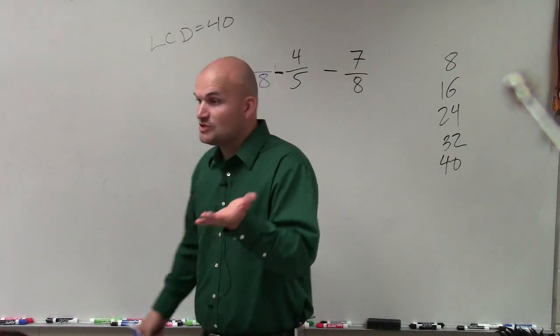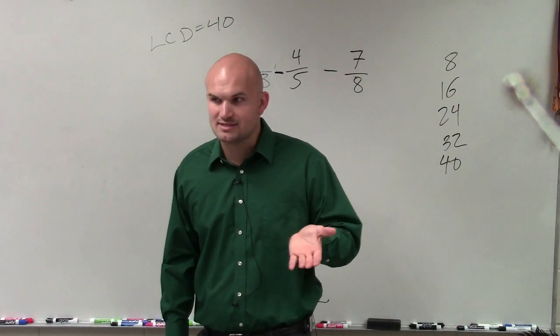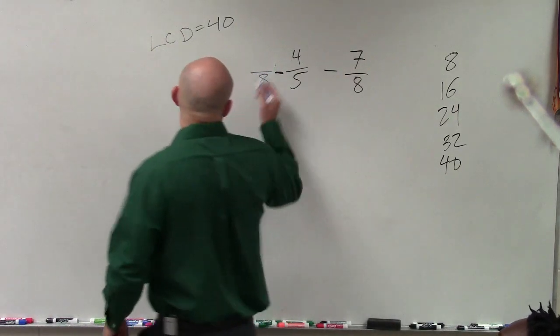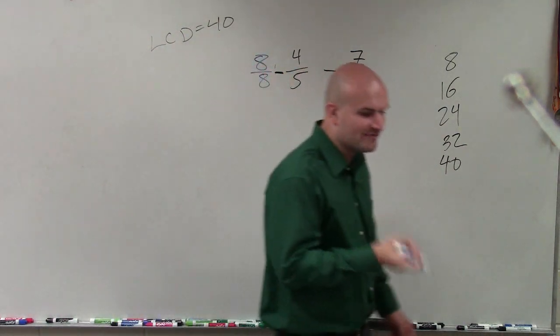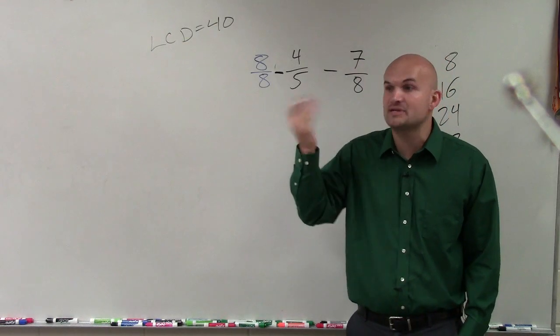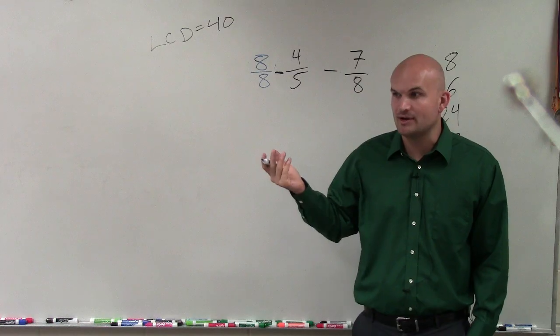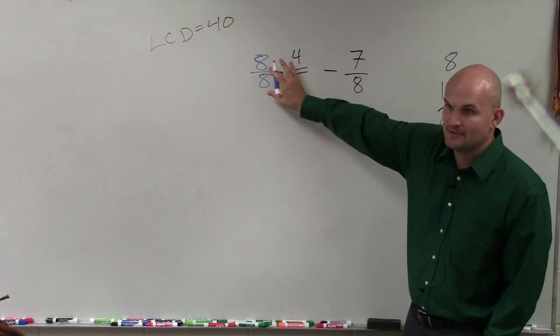Think of 1 half. If you multiply 1 half by 3 on the bottom, you now have 1 sixth. Is 1 half and 1 sixth the same? No. So you have to multiply it on the top and the bottom, which produces what we call equivalent fractions. Because think about 1 half. If you multiply by 3 over 3, that becomes now 3 sixths. Is 3 sixths equivalent to 1 half? Yes. So always make sure you multiply on the top and the bottom.